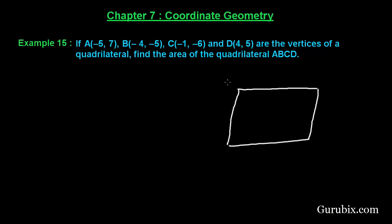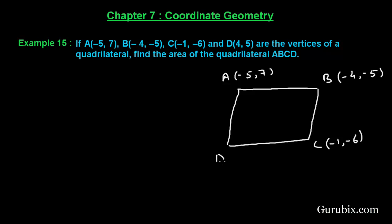Suppose this is a quadrilateral whose coordinates are A(-5, 7), B(-4, -5), C(-1, -6), and D(4, 5). We have to find the area of this quadrilateral ABCD. So let us see how to do it.